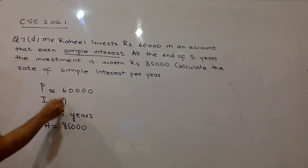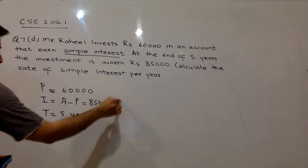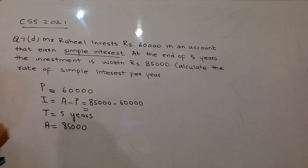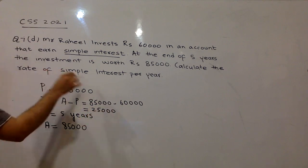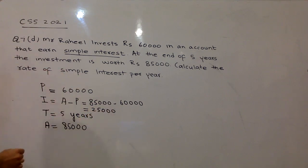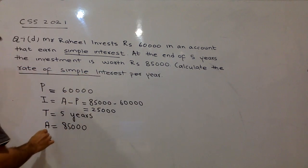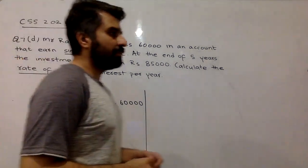the interest is 25,000. Now this is the rate of simple interest, calculate the rate of simple interest. We call R the rate of simple interest.